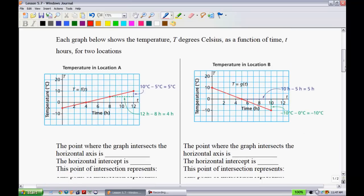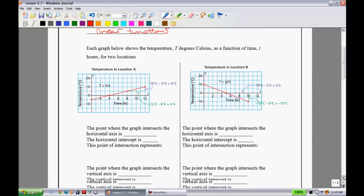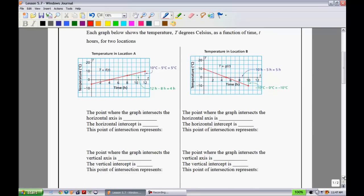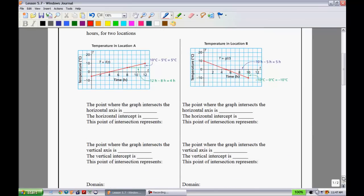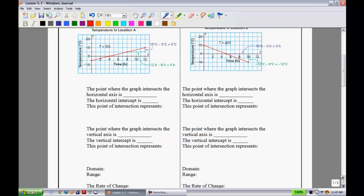Each graph below shows the temperature T degrees Celsius as a function of time t hours for two locations. We're going to take a look at these two graphs and pull out information from both. I'm going to do the one on the left first and then mosey on to the right. We have the temperature graphed across time for two different locations. Location A, you can see the temperature is rising whereas in B it's decreasing.